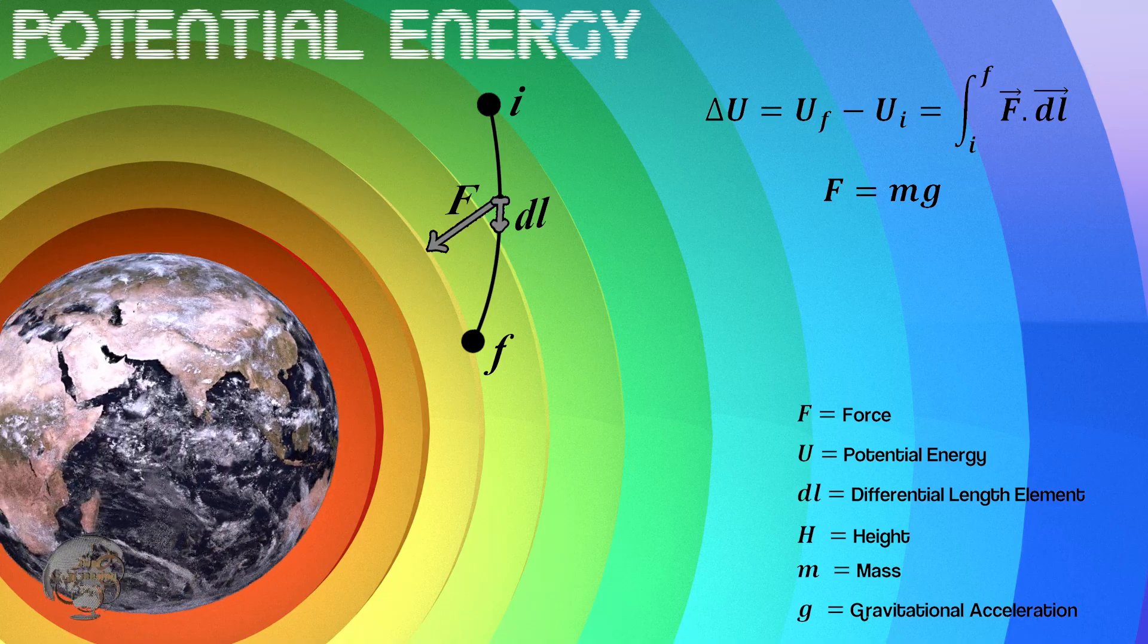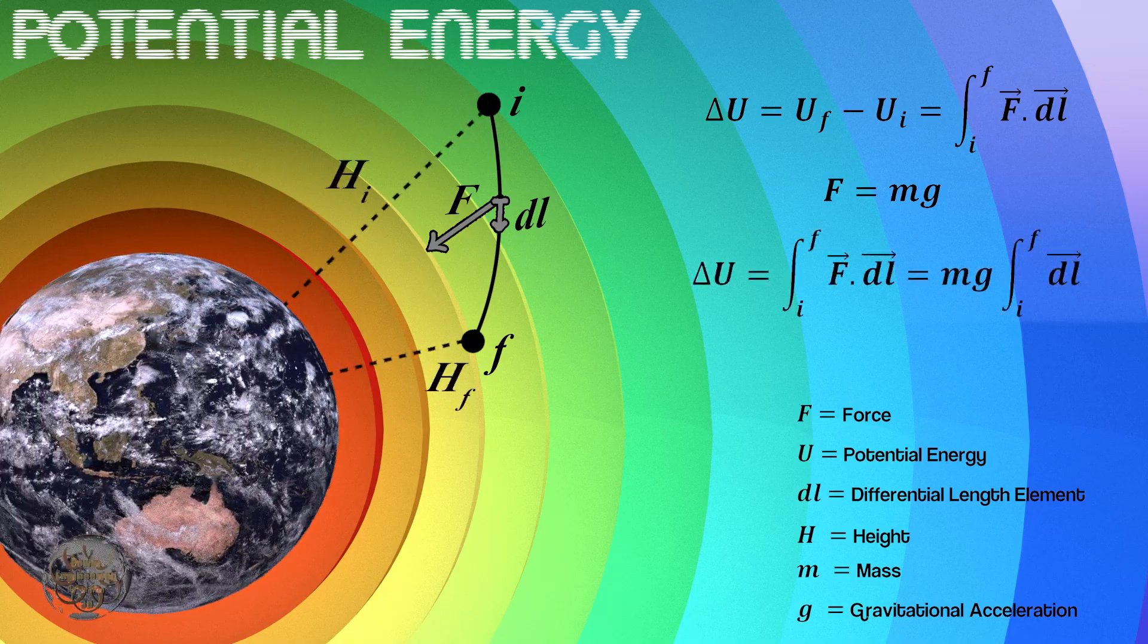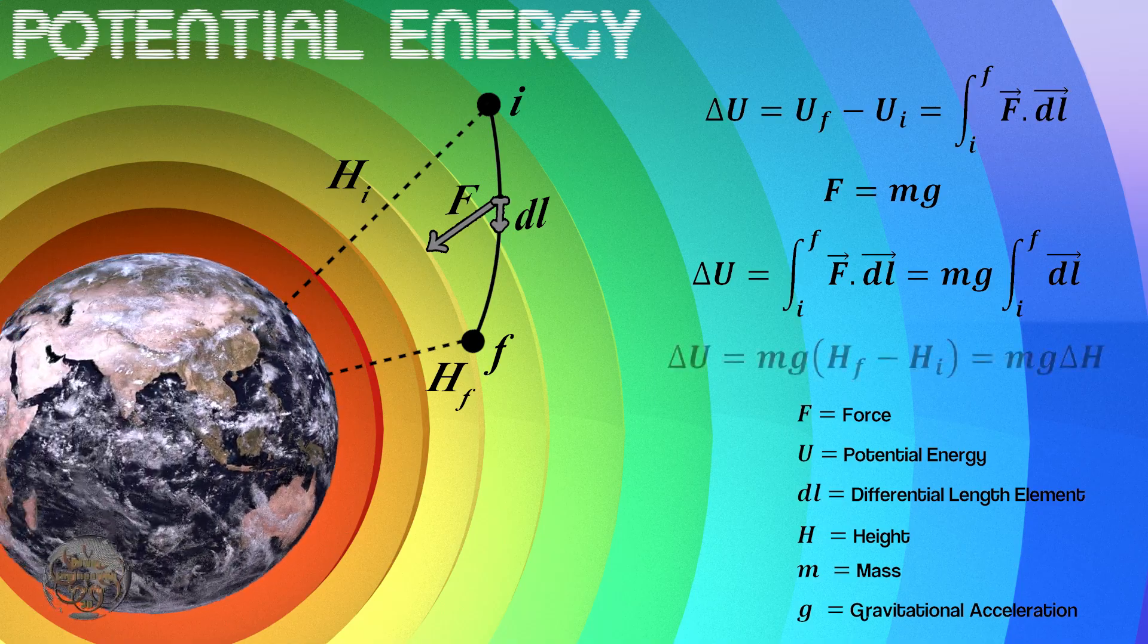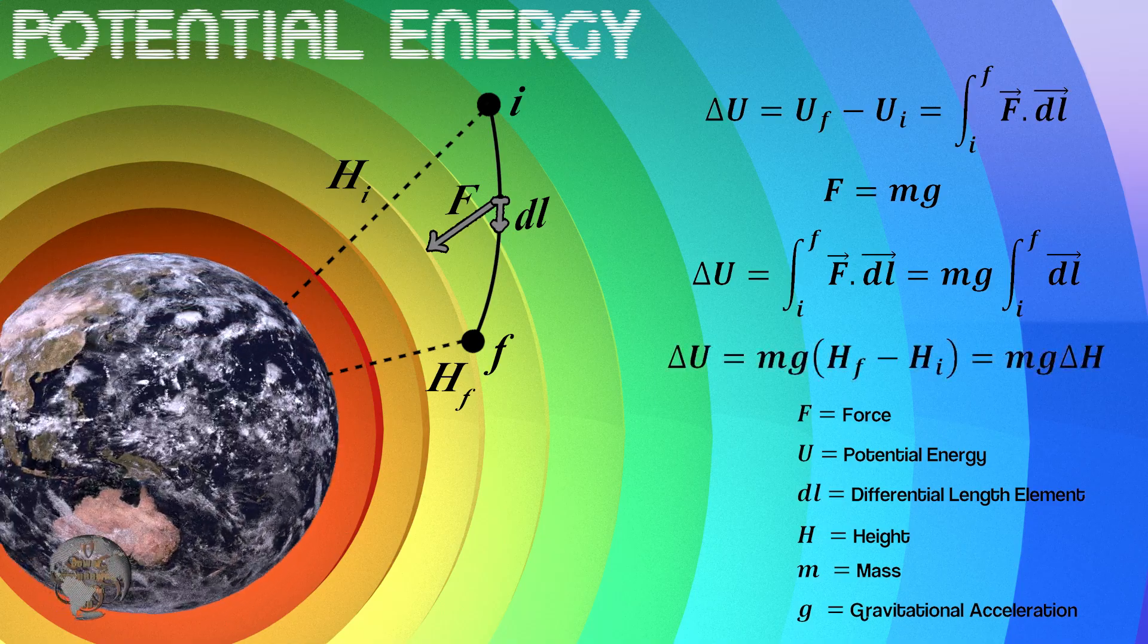Assuming that gravitational acceleration and mass are constant, gravitational potential energy depends only on the object's height. If the height changes, the potential energy will change.